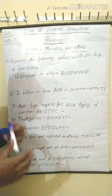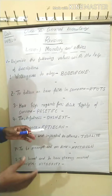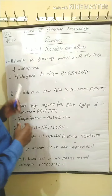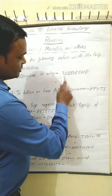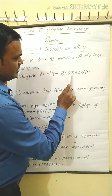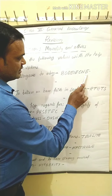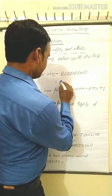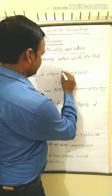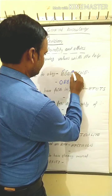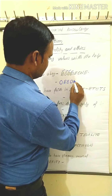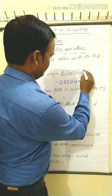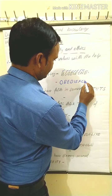We will first convert the jumbled word into the unjumbled form in the proper way. Read here, solve one by one. First description: willingness to obey. The jumbled letters are P-O-D-E-I-E-C-N-E. The correct unjumbled word is Obedience.